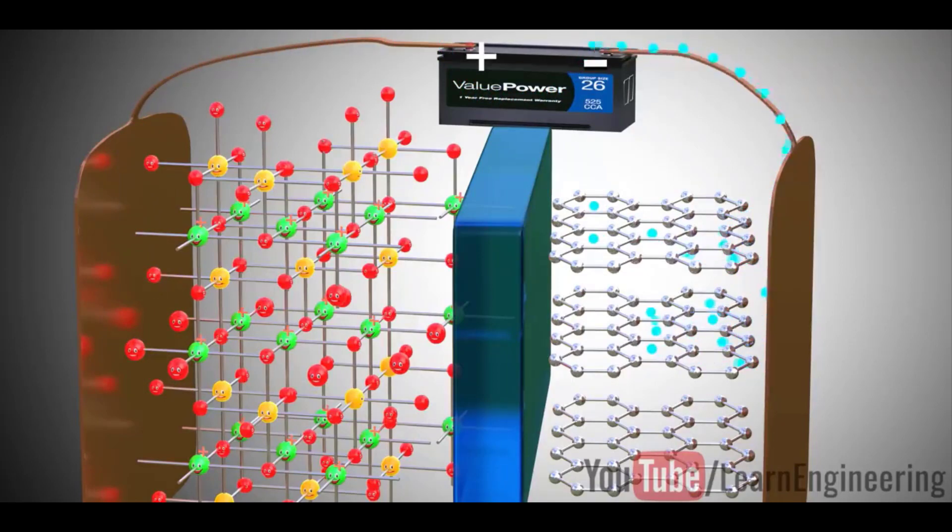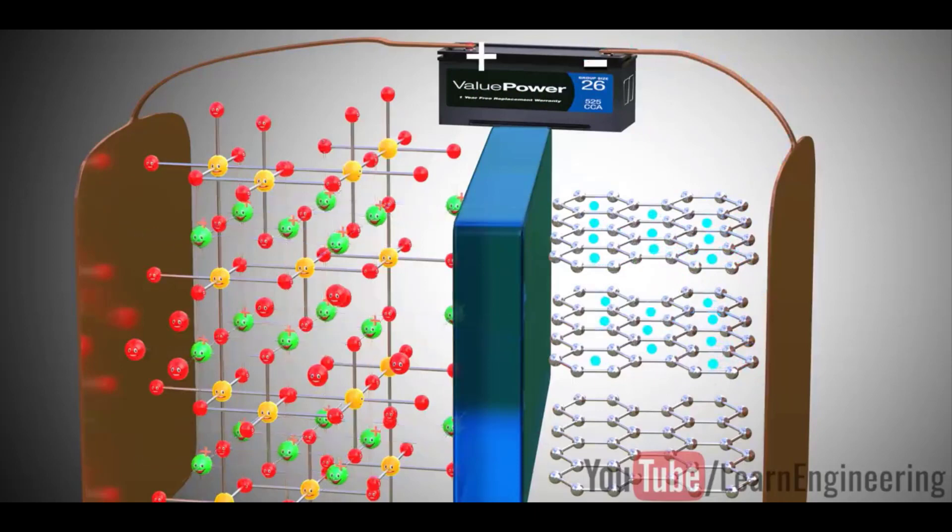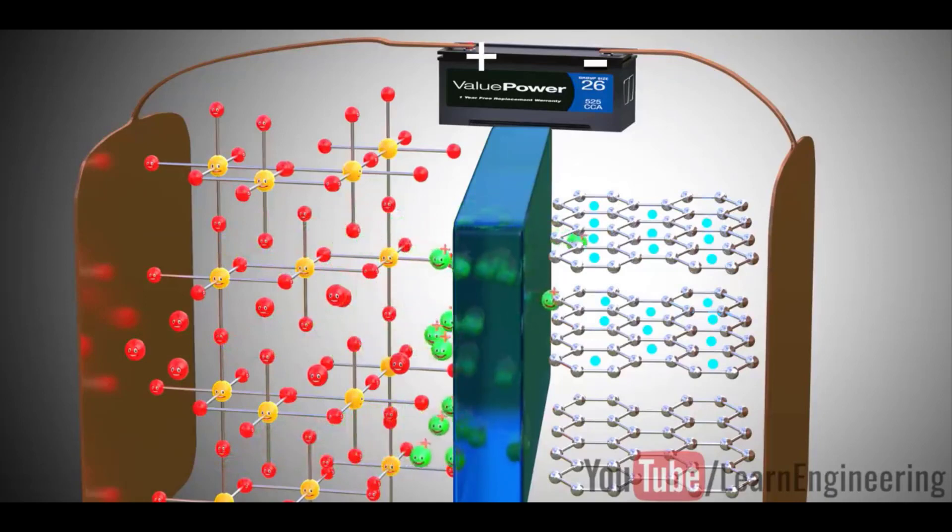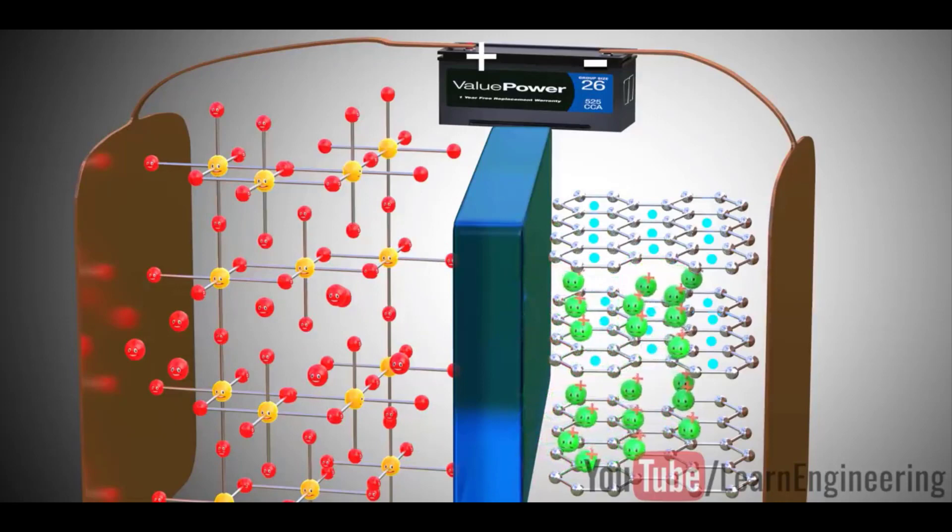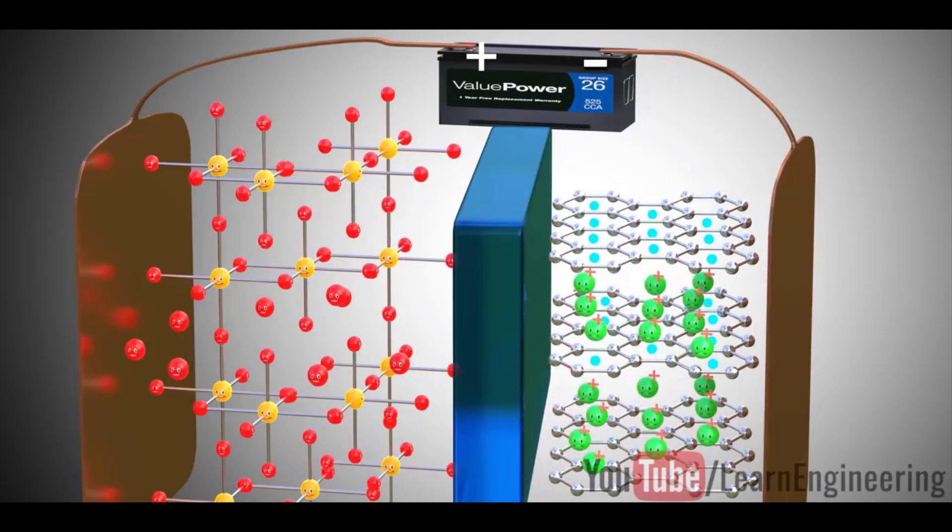In the meantime, the positively charged lithium ions will be attracted towards the negative terminal and will flow through the electrolyte. Lithium ions also reach the graphite layer space and get trapped there. Once all the lithium atoms reach the graphite sheet, the cell is fully charged. Please note that graphite does not have a role in the chemical reaction of the lithium cells. It just acts as a storage medium.